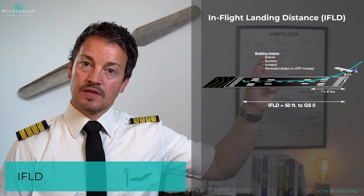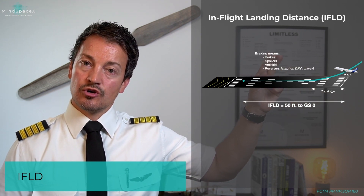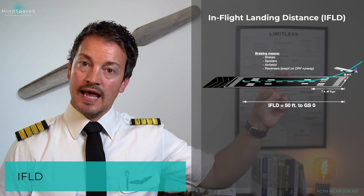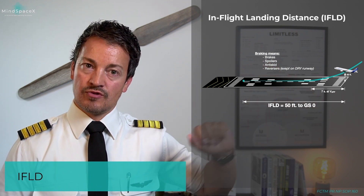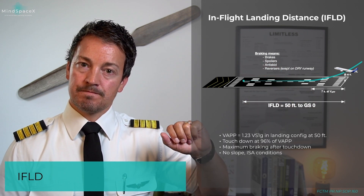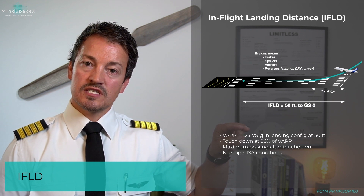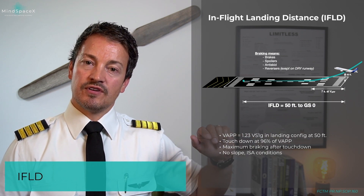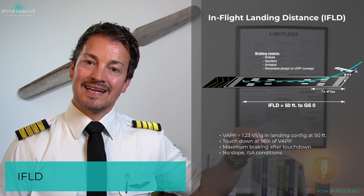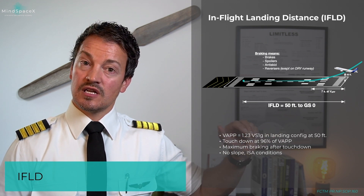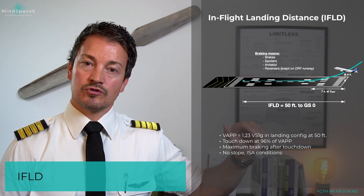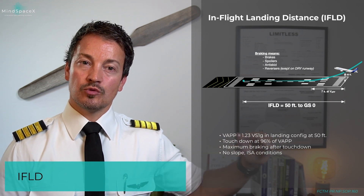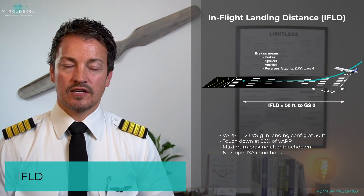Braking is the same — it considers brakes, spoilers, anti-skid, and reverse thrust except on a dry runway. V approach is the same: 1.23 at 50 feet, touchdown at 96% of the approach speed, not at V approach. Maximum braking after touchdown, no slope, and ISA conditions.